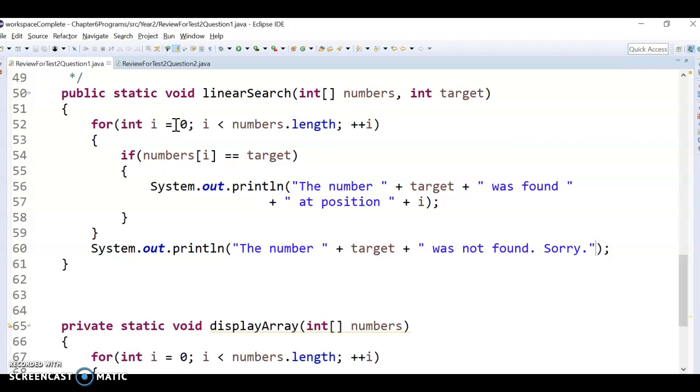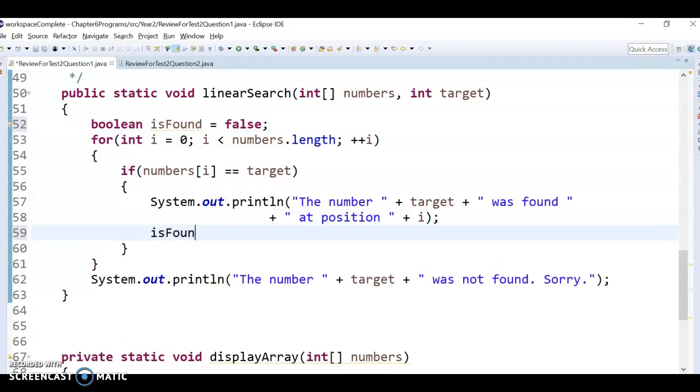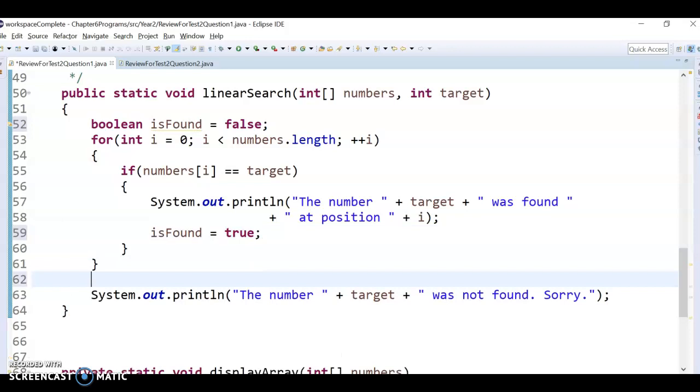But basically, there's a couple ways around it. We could do a Boolean to track if we find the target or not and set the Boolean to be like false, right? So we could do Boolean found or like is found and set it to be false, right? And then if we do find it, then we set is found to be true.